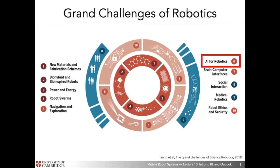I'd like to bring everything into a global perspective by showing you this image extracted from a recent overview article published in Science Robotics in 2018. As you can see, there are many different domains identified as key challenges for robotics. Addressing these key challenges would allow us to move beyond current frontiers within the domain of autonomous robots. The particular challenge we'll be focusing on today is AI for robotics.